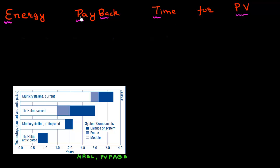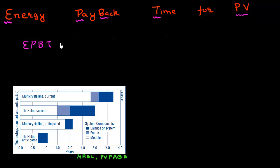Since I'm an engineer and engineers love three and four lettered acronyms, I'll abbreviate this as EPBT, or energy payback time. The definition is essentially contained in the title itself: it represents the amount of time required to pay back or recover the amount of energy which was used to make the solar panel in the first place. I can express this mathematically as the EPBT.